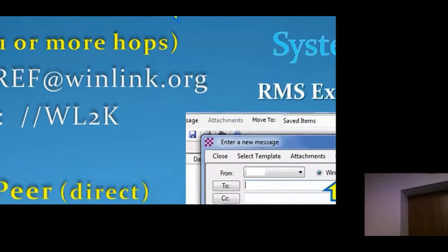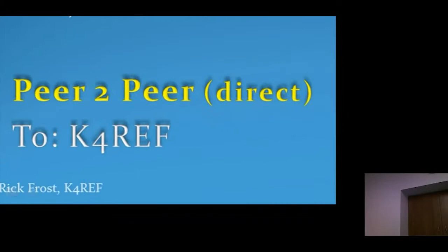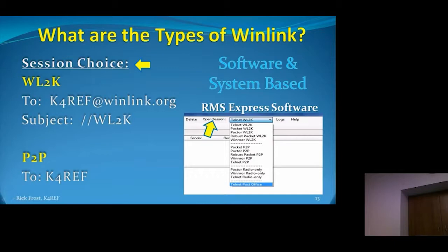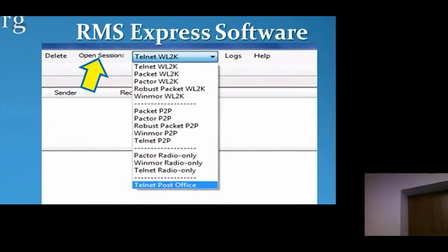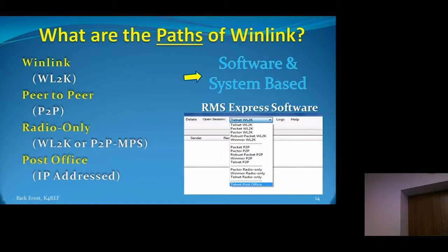The other type of message is peer-to-peer — a direct message between two radio operators. In this case, the only thing needed in the address line is the call sign of the recipient, for example K4REF. Once a message type is chosen, you can choose an automated session to send that message. There are both WL2K sessions and peer-to-peer sessions listed in the session drop-down window in RMS Express. The paths messages can take are: Winlink, peer-to-peer, radio only, and post office.